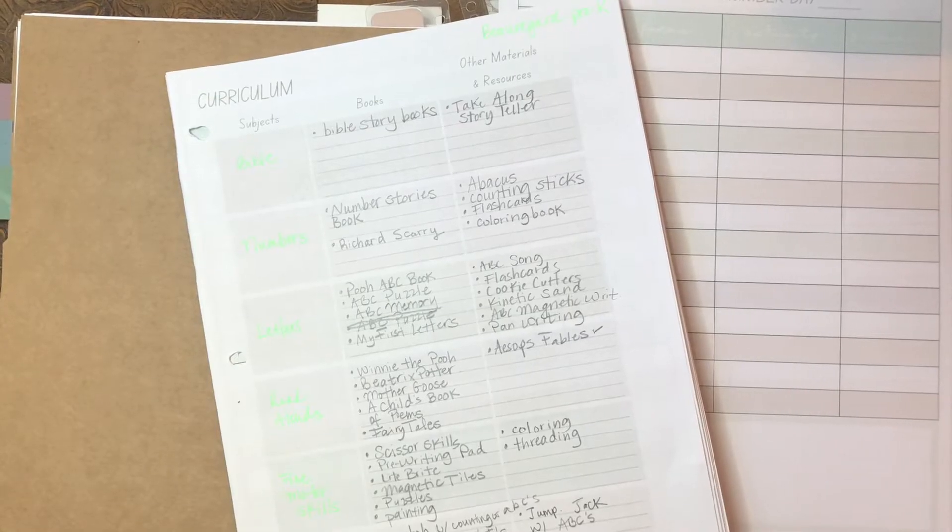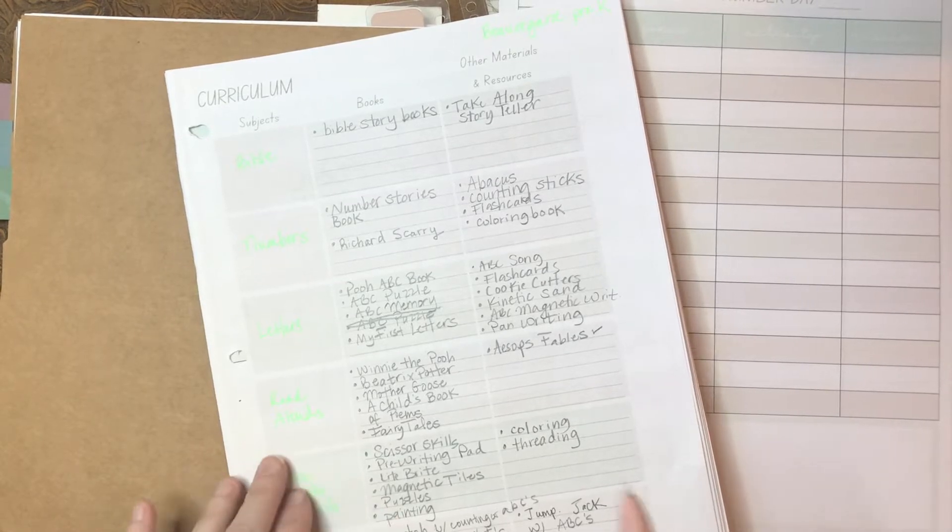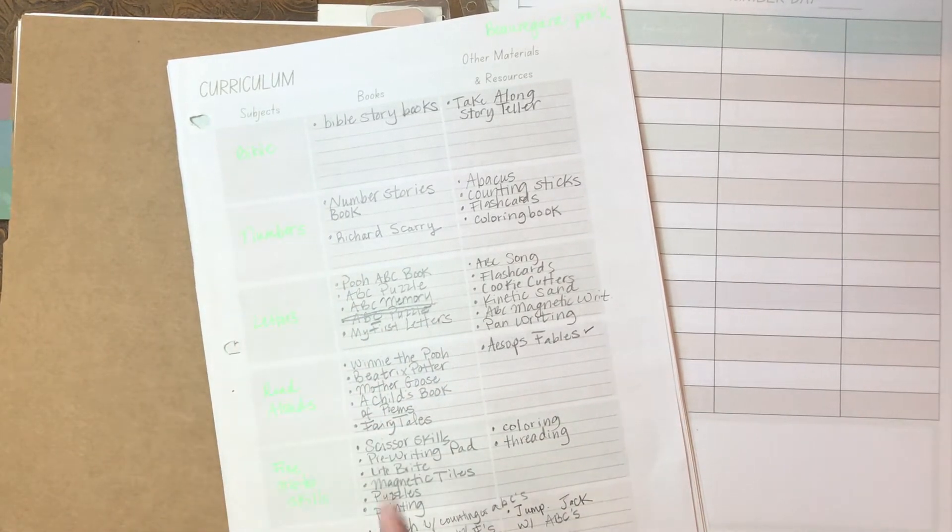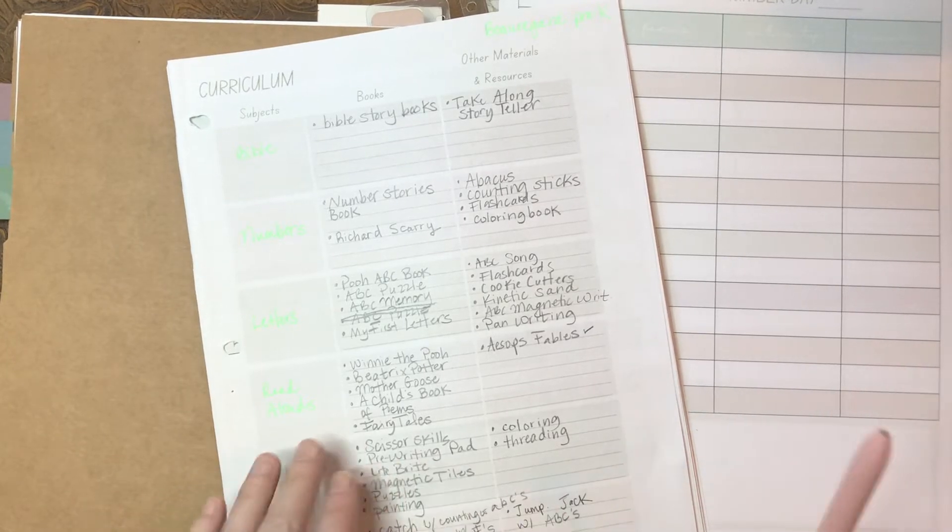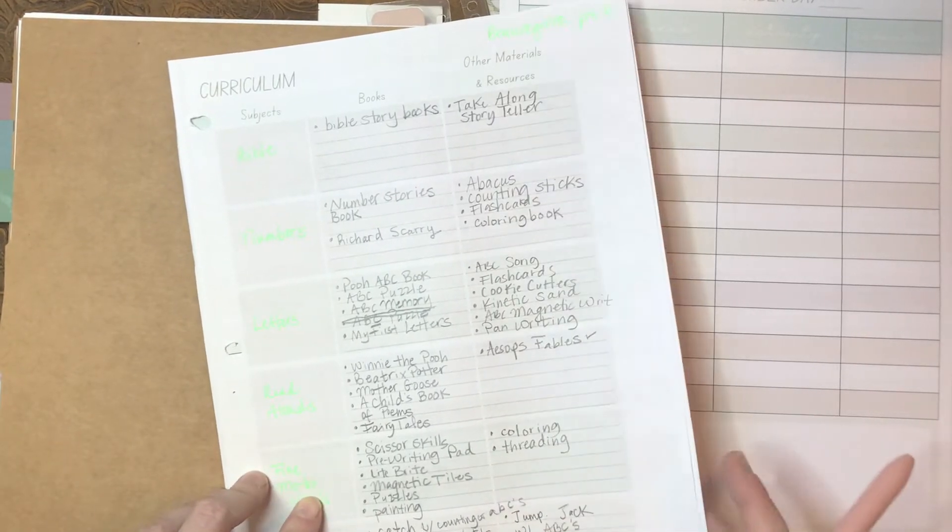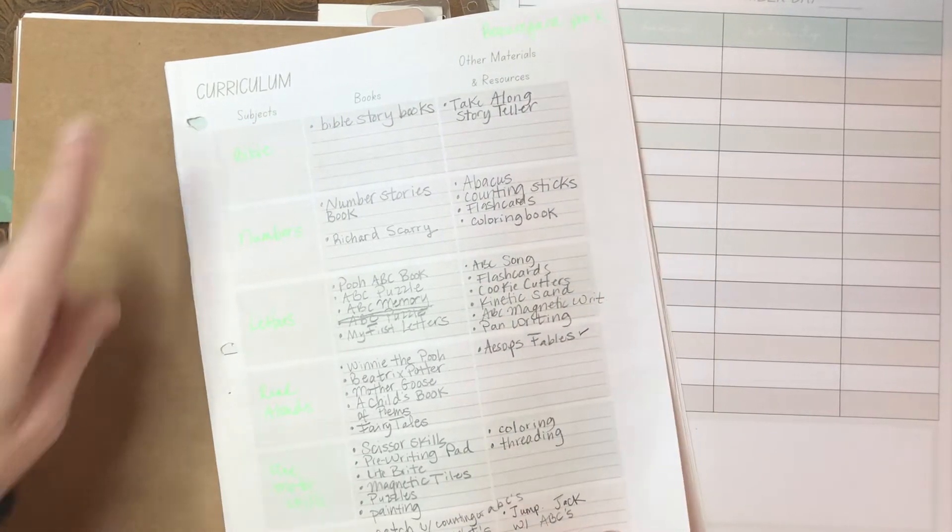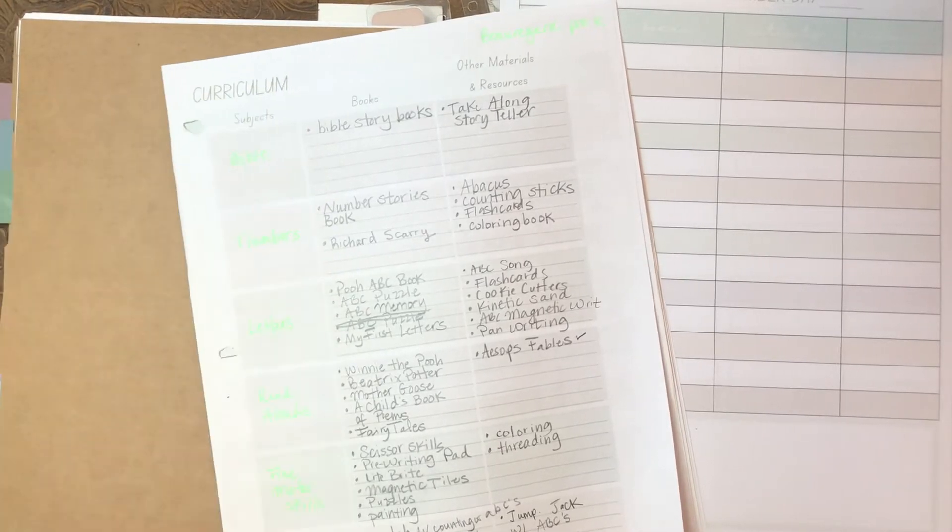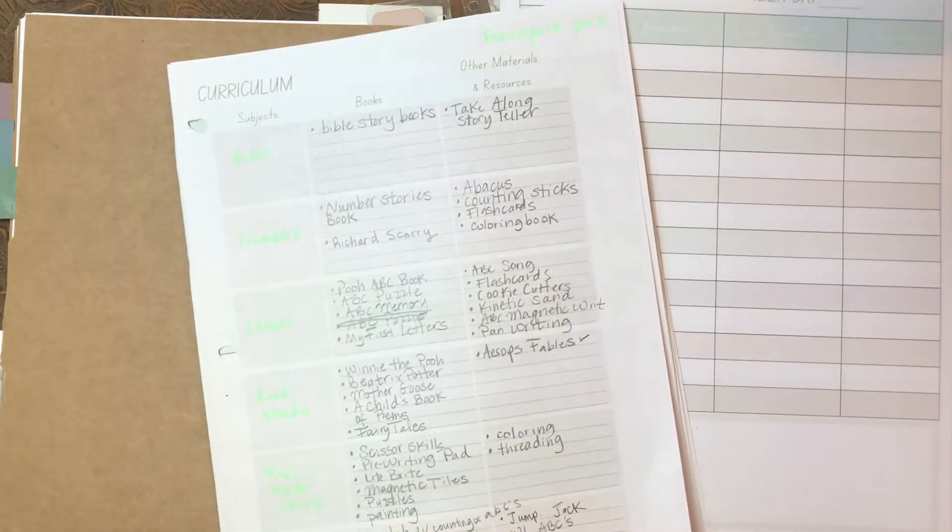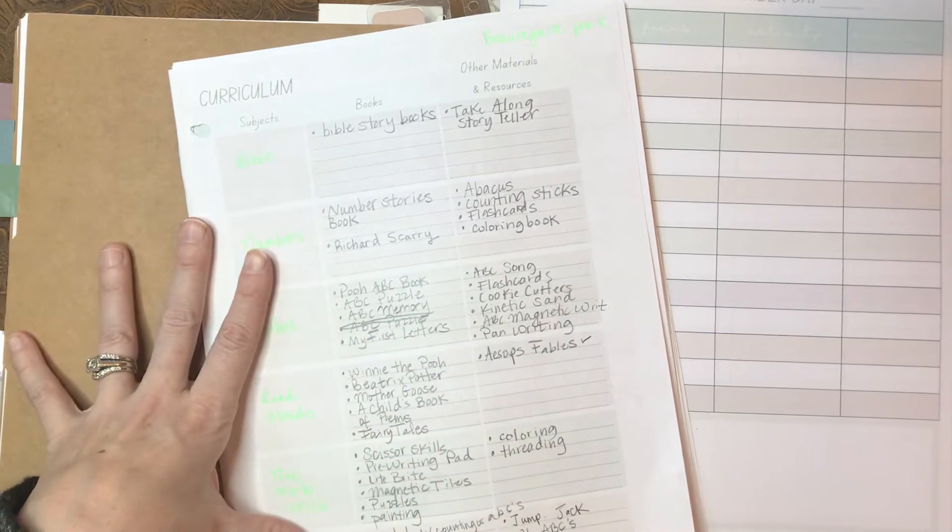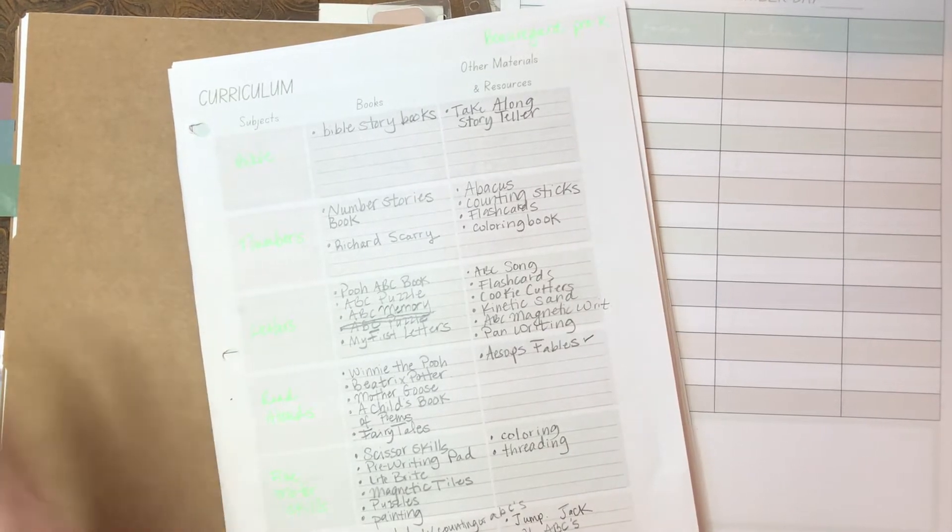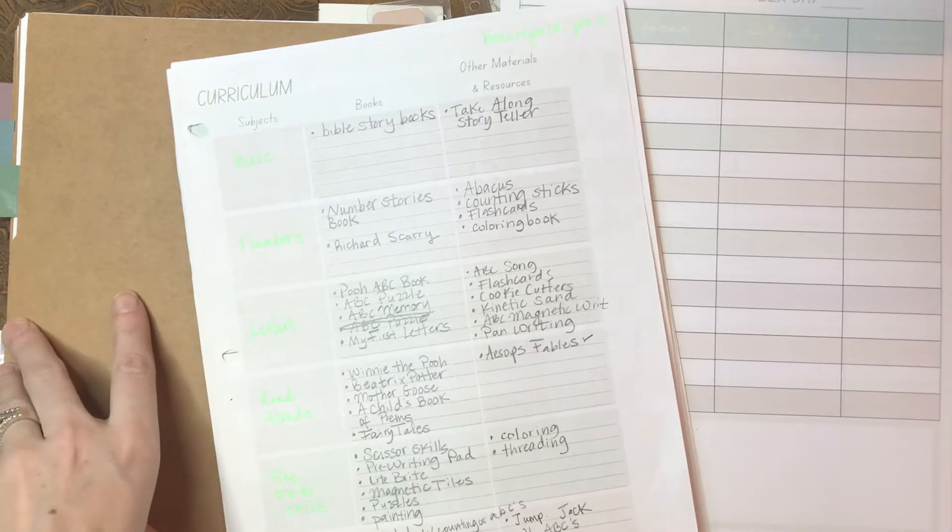Welcome to my planner. I was going over this stuff last night and I looked over my curriculum list. This is something I do before school starts. I've got my subjects: Bible, numbers, letters, read alouds, and then some skills - fine motor and gross motor skills - and some activities and resources. Most of these I already had, and then there was a few things I bought at the beginning of the year. You mostly want to shop your house and figure out what skills or goals you have for them for the year, and then designate that into a subject and what resources you have that can accommodate those goals.